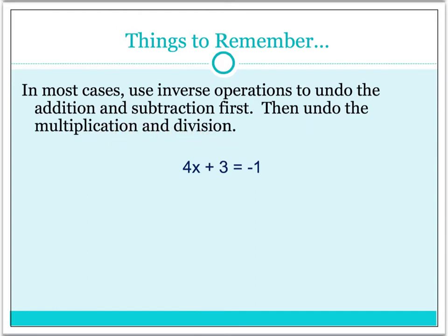So when you come to a problem, what you first want to notice is that the variable x is on the left-hand side of the equal sign. You also want to notice that there has been a 3 added to that x, and there's a 4 being multiplied to that variable. Because the rules tell us to undo the addition and subtraction first, we know we need to undo this adding of 3. The inverse operation of addition is subtraction, so we will subtract 3.